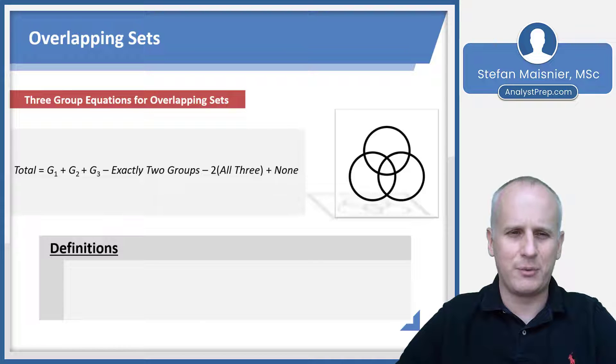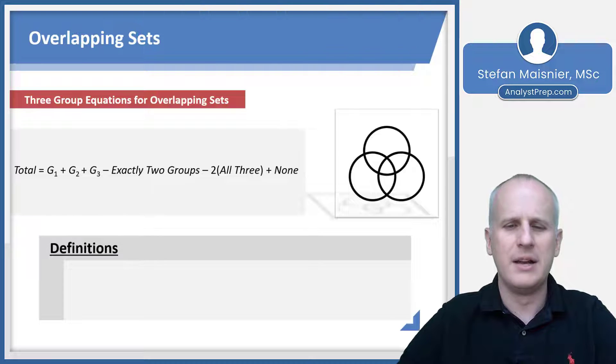Let's just define what we have here with our total is equal to G1 plus G2 plus G3 minus exactly two groups minus two times the quantity all three plus none.